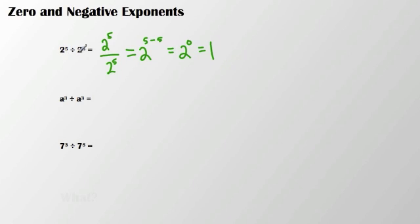Same thing if I take a to the 3rd and divide it by a to the 3rd. I have a to the 3 minus 3, and that's going to get me a to the 0, and that equals 1. And this kind of relates to our first rule: a non-zero number raised to the 0 power is equal to 1. So an important rule here.